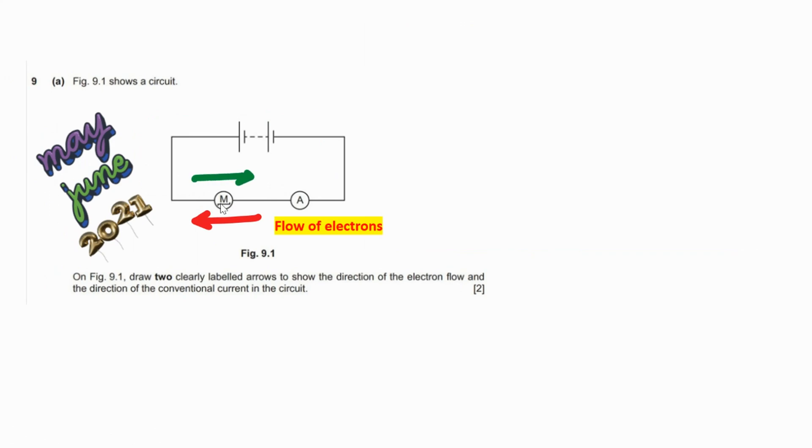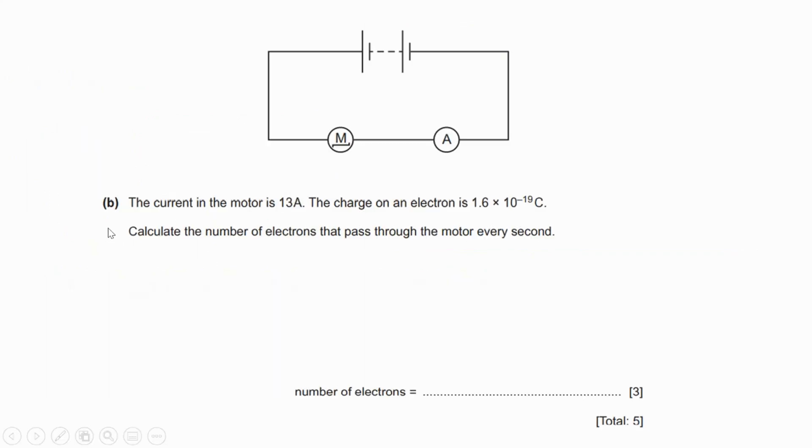Part (b): The current in the motor is 13 amperes. The charge on an electron is 1.6 × 10^-19 coulombs. Calculate the number of electrons that pass through the motor every second.